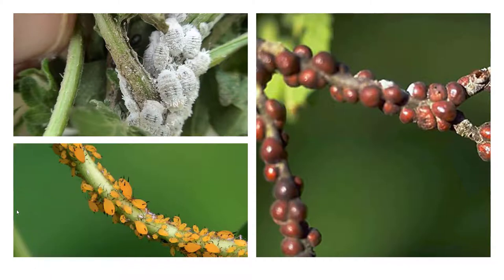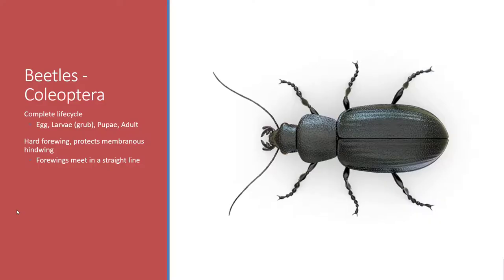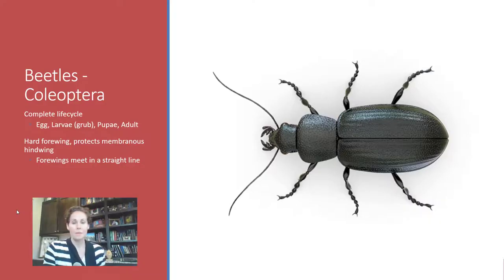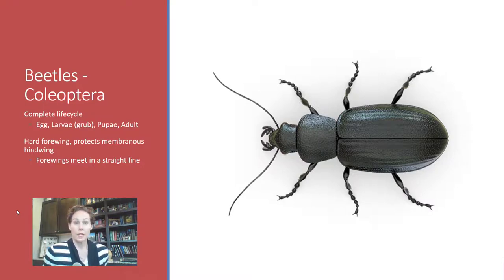Here are some pictures of some very unusual homopterans. Many times they can be sedentary — mealybugs on the top left, scales on the right, and aphids on the bottom left. The other type of insect you are most likely to come across when you collect something is a beetle — if it's not a true bug, it's probably a beetle.